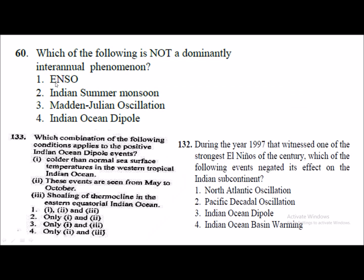Here are some questions asked in previous examinations. From CSIR NET 2016: 'Which of the following is not a dominantly inter-annual phenomenon?' ENSO and Indian Ocean Dipole both occur on an inter-annual basis, with a frequency of 5 to 7 years. The Indian summer monsoon is a seasonal phenomenon, but the Madden-Julian Oscillation occurs on a monthly basis — around every 30 to 90 days in the equatorial region — making it the answer.